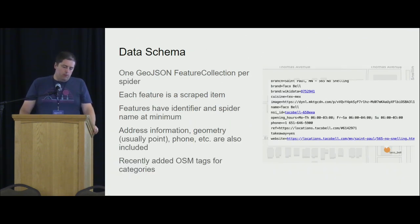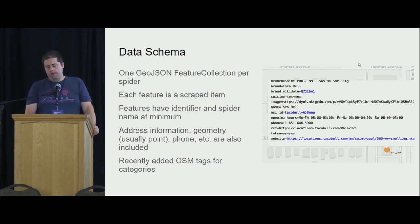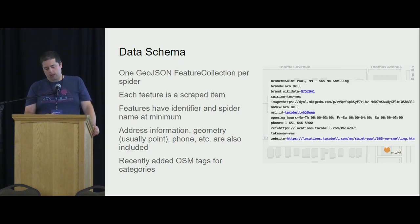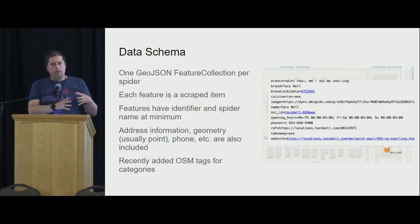This is an example of what the output looks like. The output is one GeoJSON feature collection per spider, with a whole bunch of attributes. We recently settled on merging in with the name-suggestion index, so we get some OpenStreetMap tags in here. We normalize the phone number. We have some code to convert opening hours strings into OpenStreetMap opening hours format. We grab image and website and all sorts of things automatically. All of that ends up in a GeoJSON feature collection for you to either merge together into one big output or treat per brand.